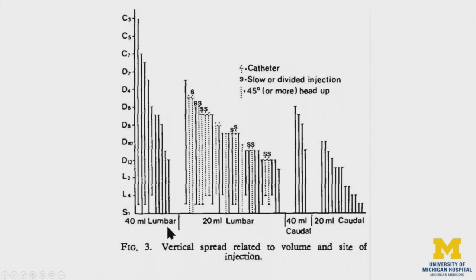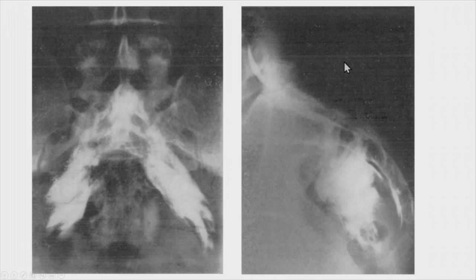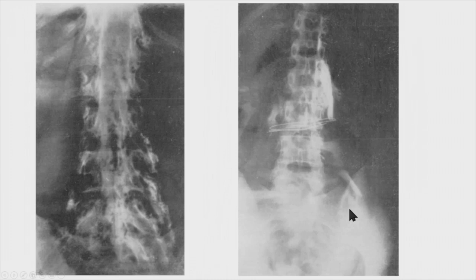This is their diagram. You can see where they injected 40 mLs in the lumbar region — there was wide variability in where the drug mixed with contrast actually went up into the spine. Injected at L2, some patients went all the way up to C3. With 20 mLs in the lumbar spine, there was again wide variability. Injecting caudally in the coccyx also showed wide variability. These examples show injection down in the lumbar spine going all the way up on both sides.